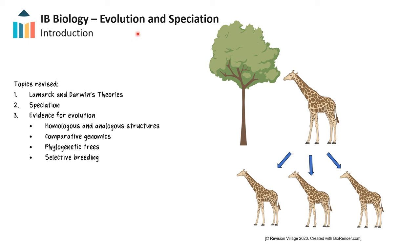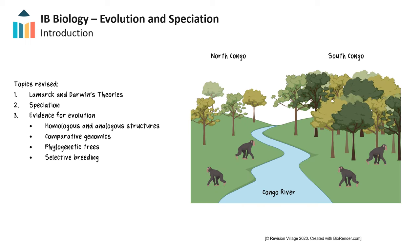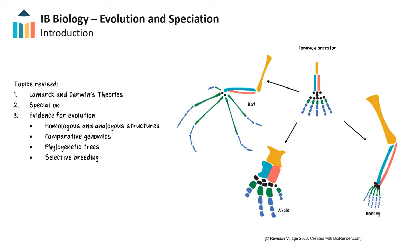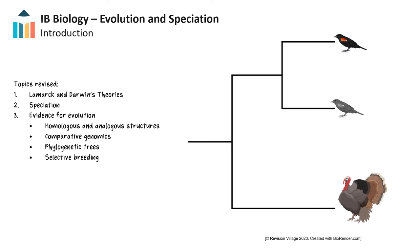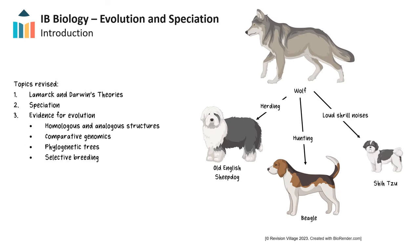In this video, we will discuss evolution and speciation. Evolution is the change in heritable characteristics of a population. Speciation is the process that generates new species through natural selection. The key concepts we'll cover include the theories of Lamarck and Darwin, the process of creating new species through speciation, and evidence for evolution, including homologous and analogous structures, comparative genomics, phylogenetic trees, as well as selective breeding.